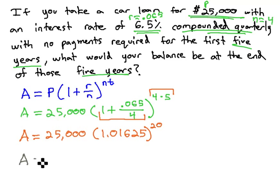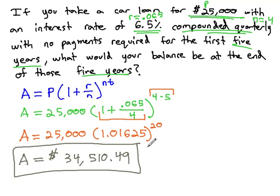Now we should be able to calculate the final amount. Depending on the type of scientific calculator you use, you might have to start with the long decimal and raise it to the 20th power, then multiply that answer times 25,000. Or some calculators are okay if you type it in exactly like it is: 25,000 times 1.01625 raised to the 20th power. Make sure you know how to use your calculator for this, and you should end up with a final loan amount of $34,510.49. So after 5 years, your car loan has gone from $25,000 to over $34,000.